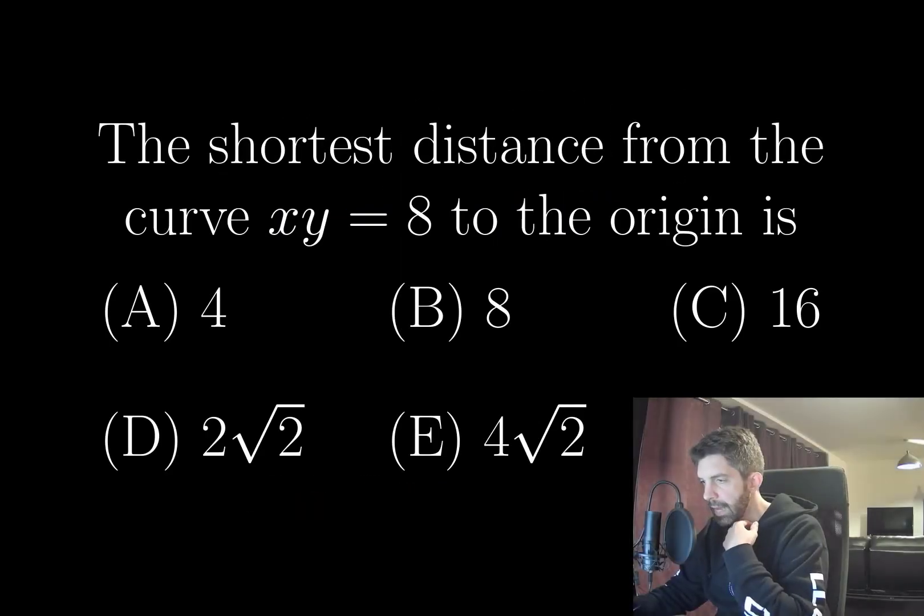The shortest distance from the curve xy = 8 to the origin is 4, 8, 16, 2 root 2, or 4 root 2.